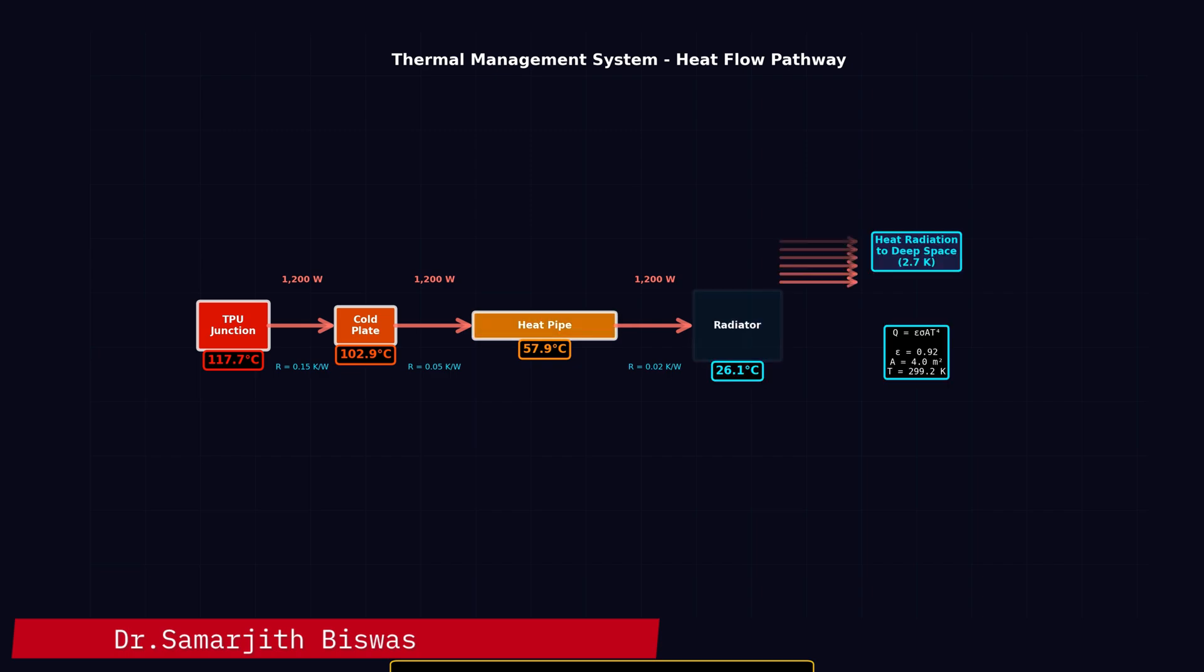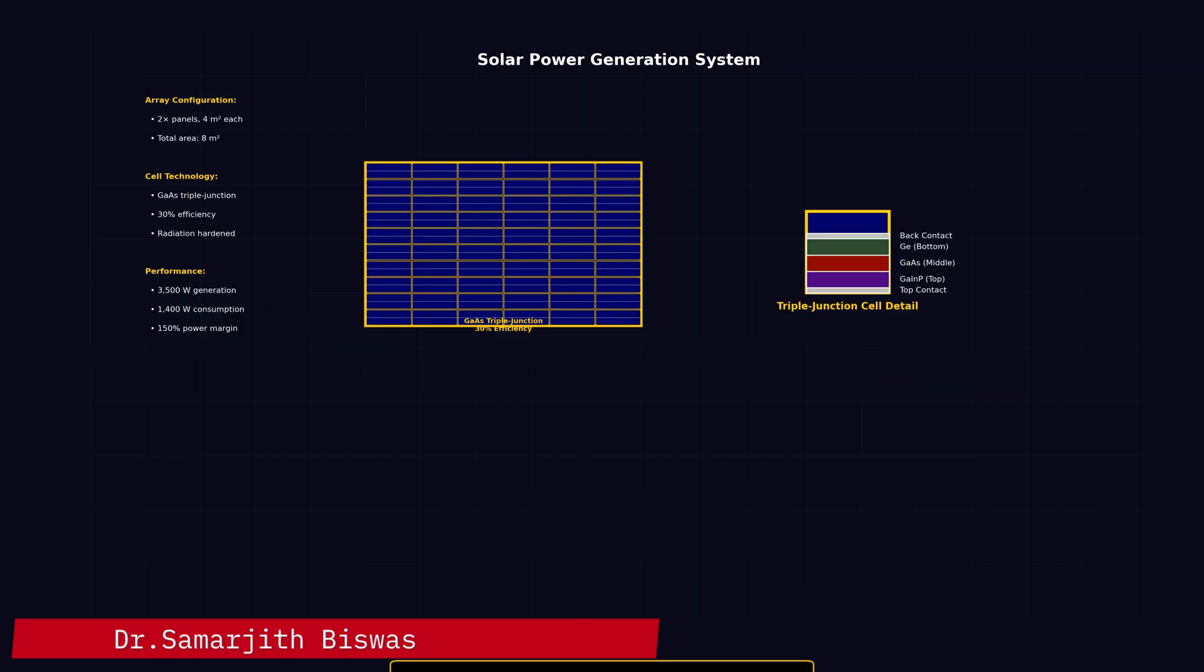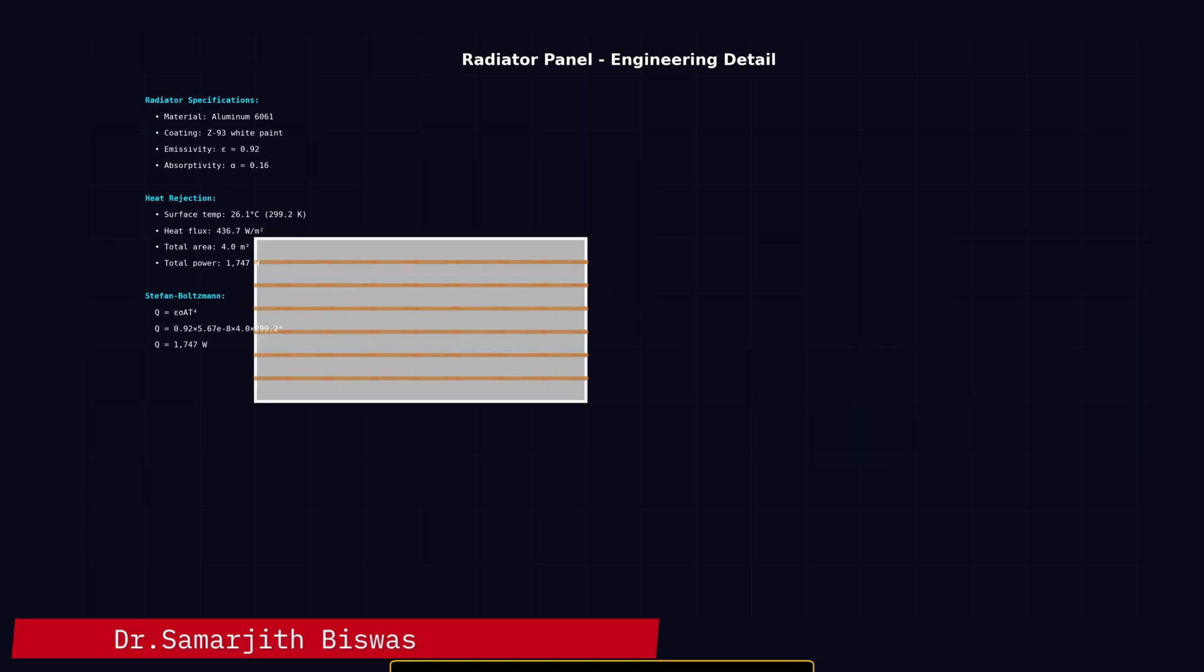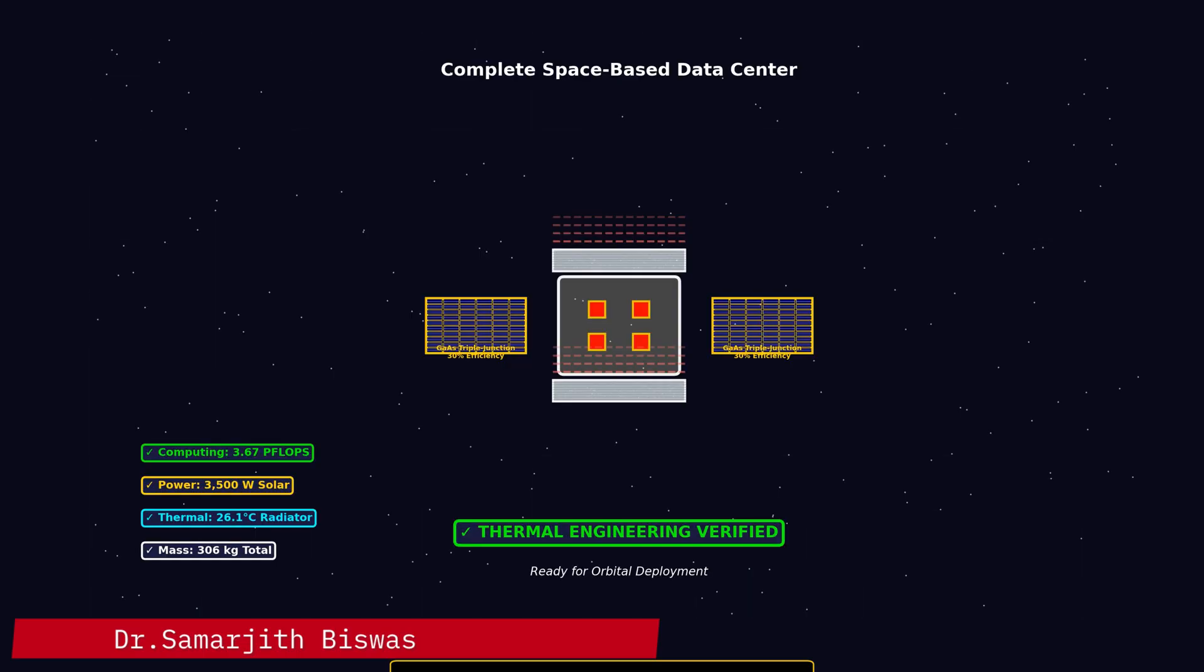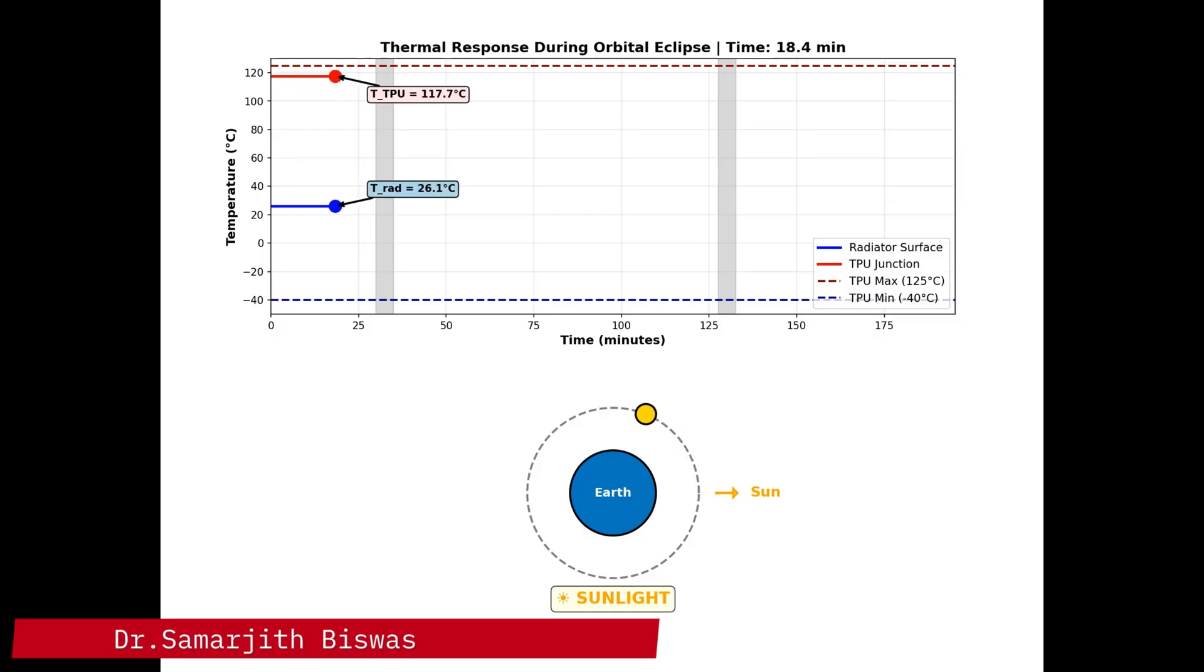I ran the thermal modeling on this. Junction temperatures stabilize at 117.7 Celsius - that's seven degrees below max spec. During eclipse periods, temperature drops by only 1.3 degrees. The thermal time constant is 37 minutes, so plenty of thermal mass. It's stable.